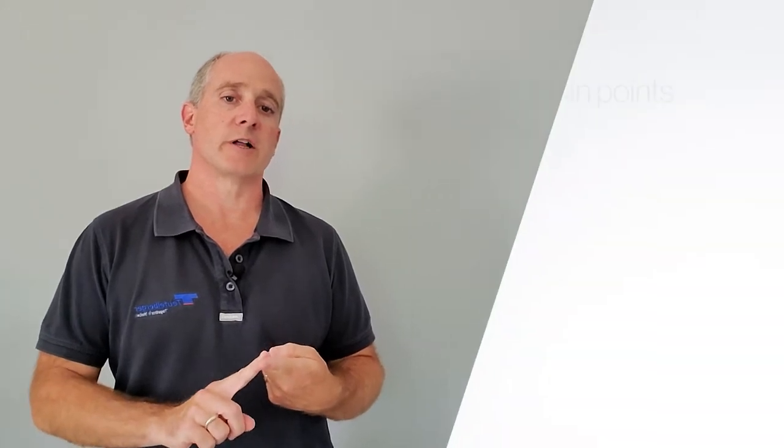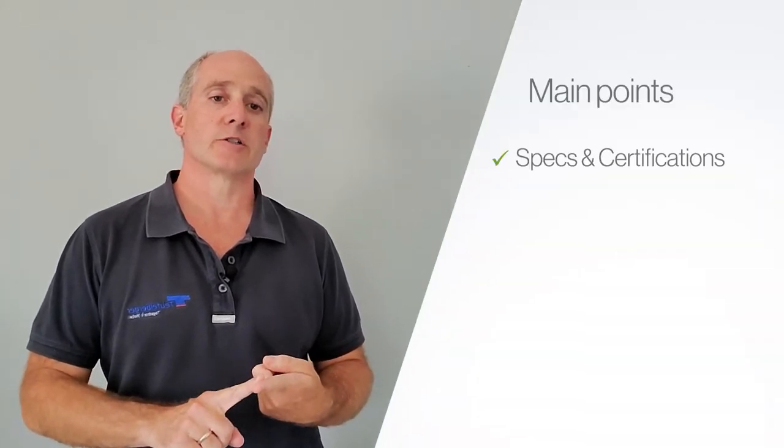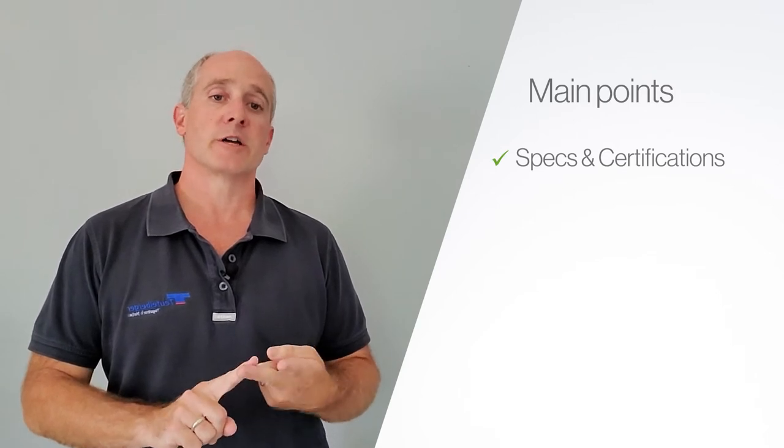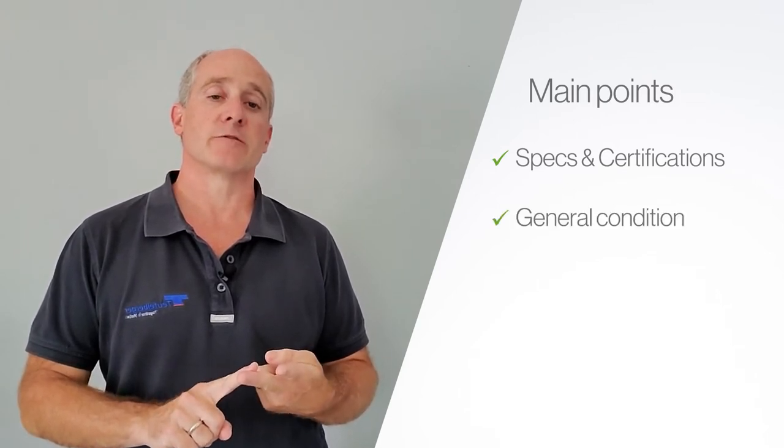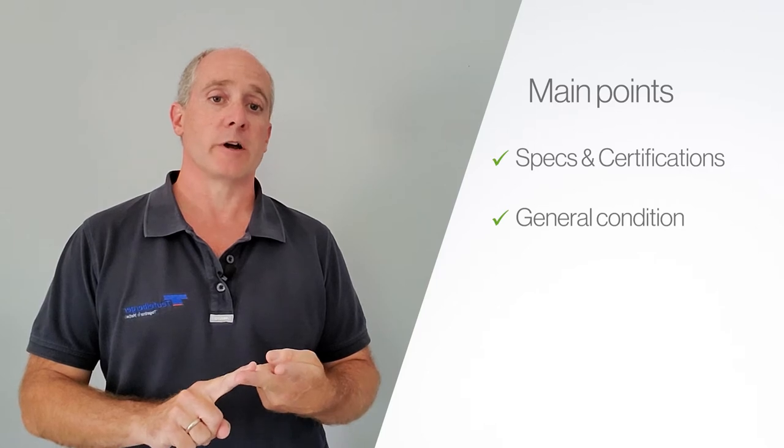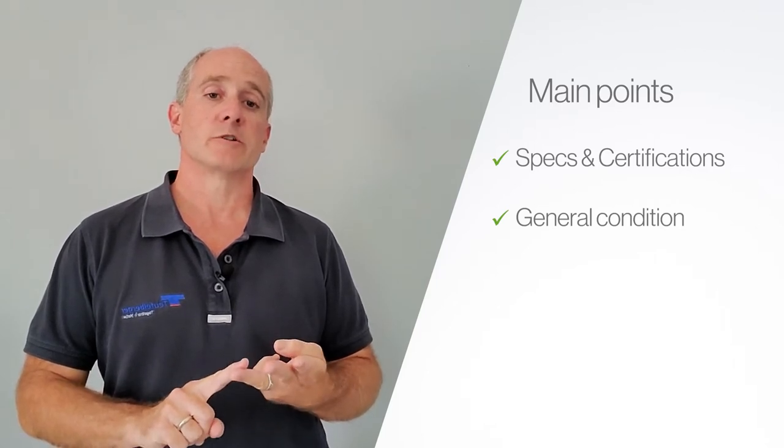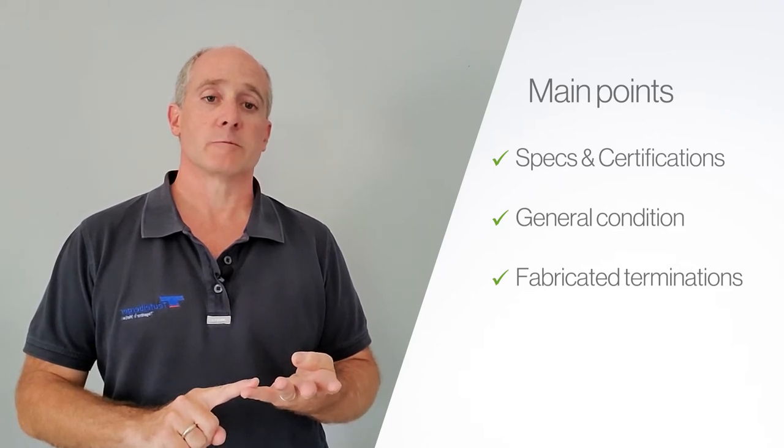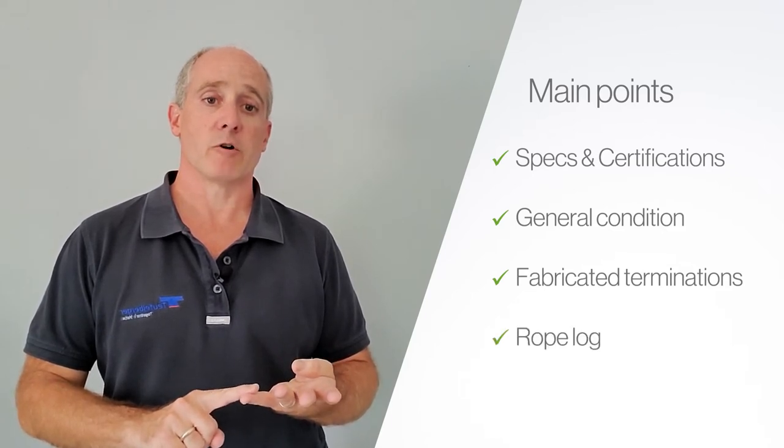A good rope inspection has four main points. First is to validate that the specs and the certifications for that rope match the hardware and the job you're about to use it for. Second is to inspect the general condition of the entire length of that rope and validate that it's in good shape. Third is to inspect any fabricated terminations. And fourth is to record the inspection and any findings in your rope log.